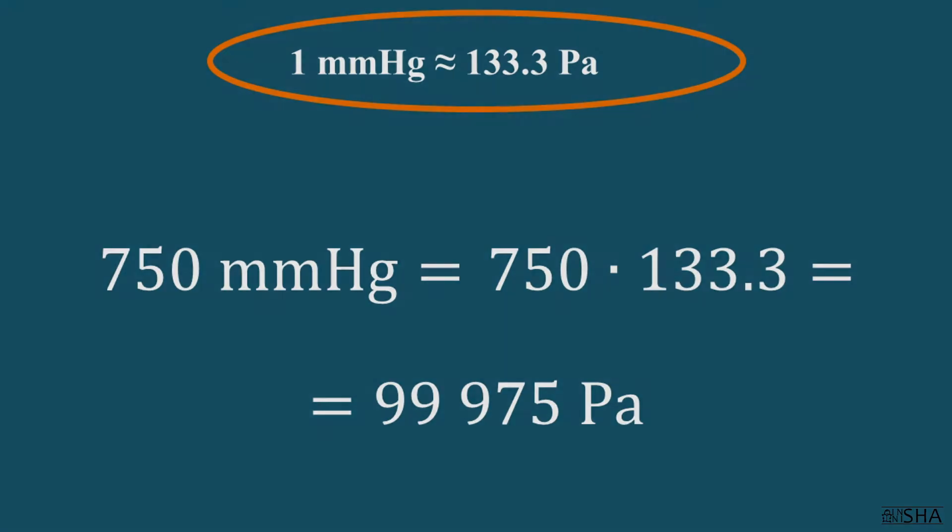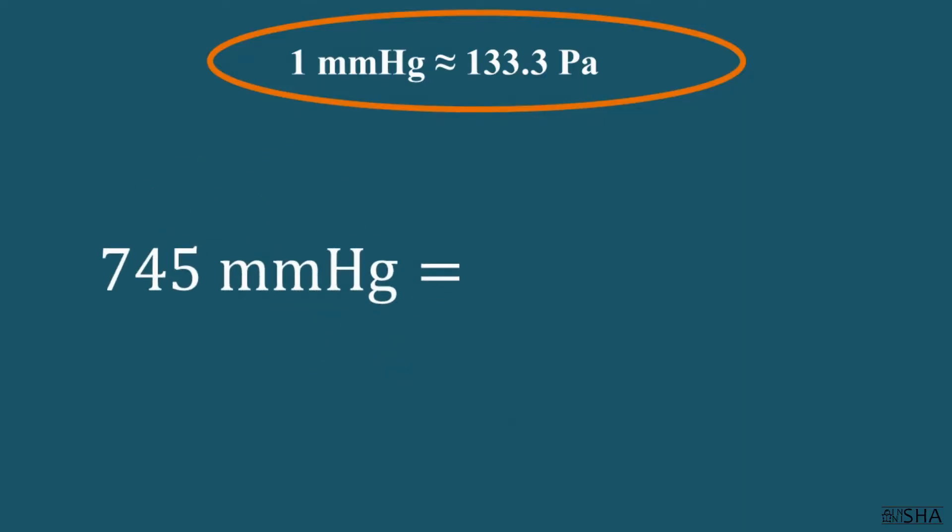Similarly, to convert 745 mm of mercury into pascals, you need to multiply by 133.3. We get 99,308.5 pascals.